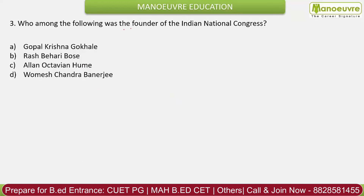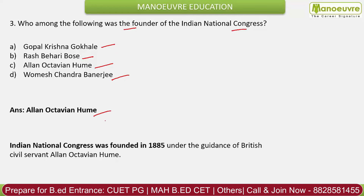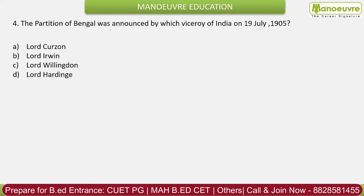Question 3: Who was the founder of the Indian National Congress? Options: Gopal Krishna Gokhale, Ras Bihari Bose, Allan Octavian Hume, Suresh Chandra Banerji. The correct answer is Allan Octavian Hume. He founded the Indian National Congress in 1885. He was a retired civil servant. The first chairman was W.C. Banerji (Womesh Chandra Banerji), and the first session was held in Bombay.